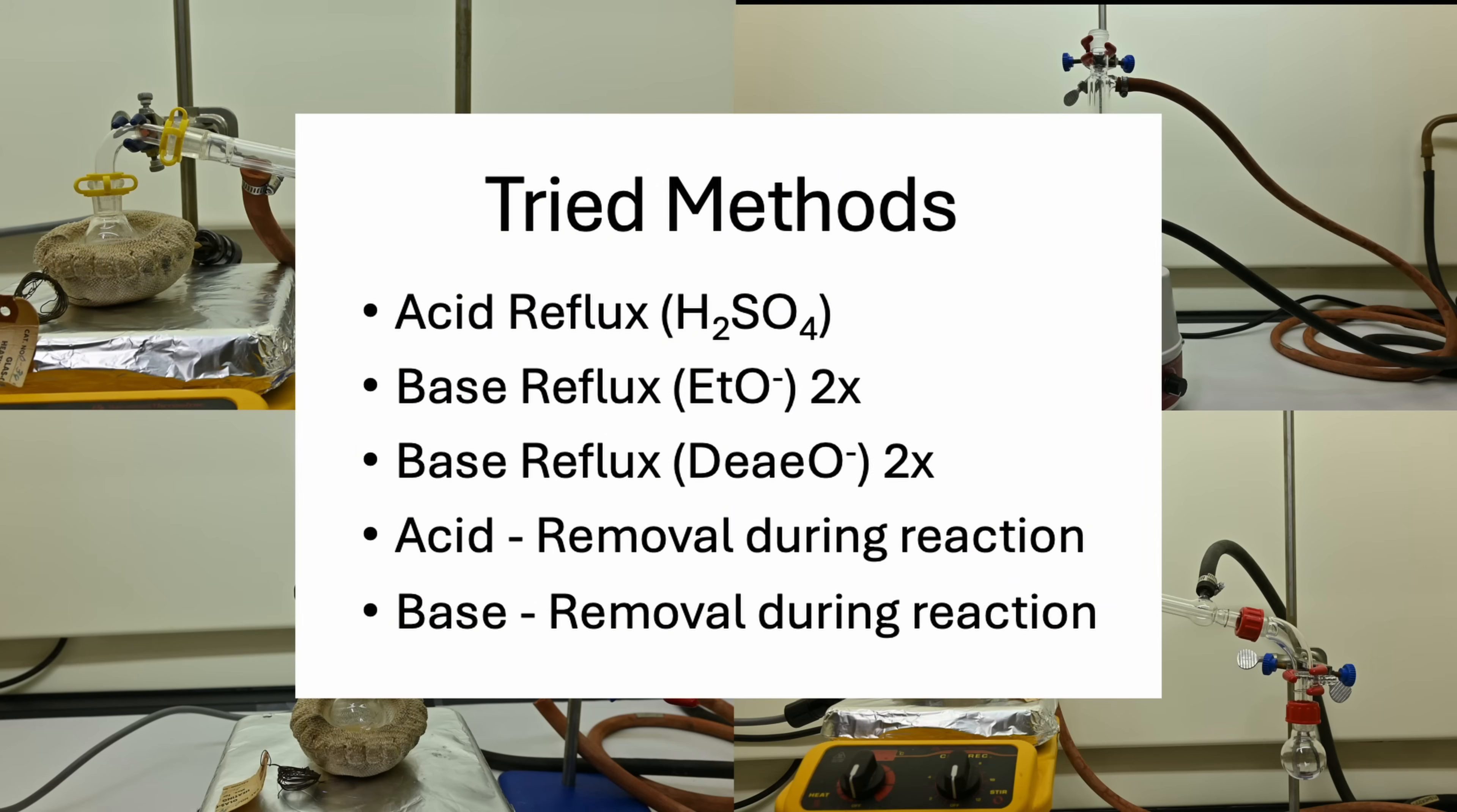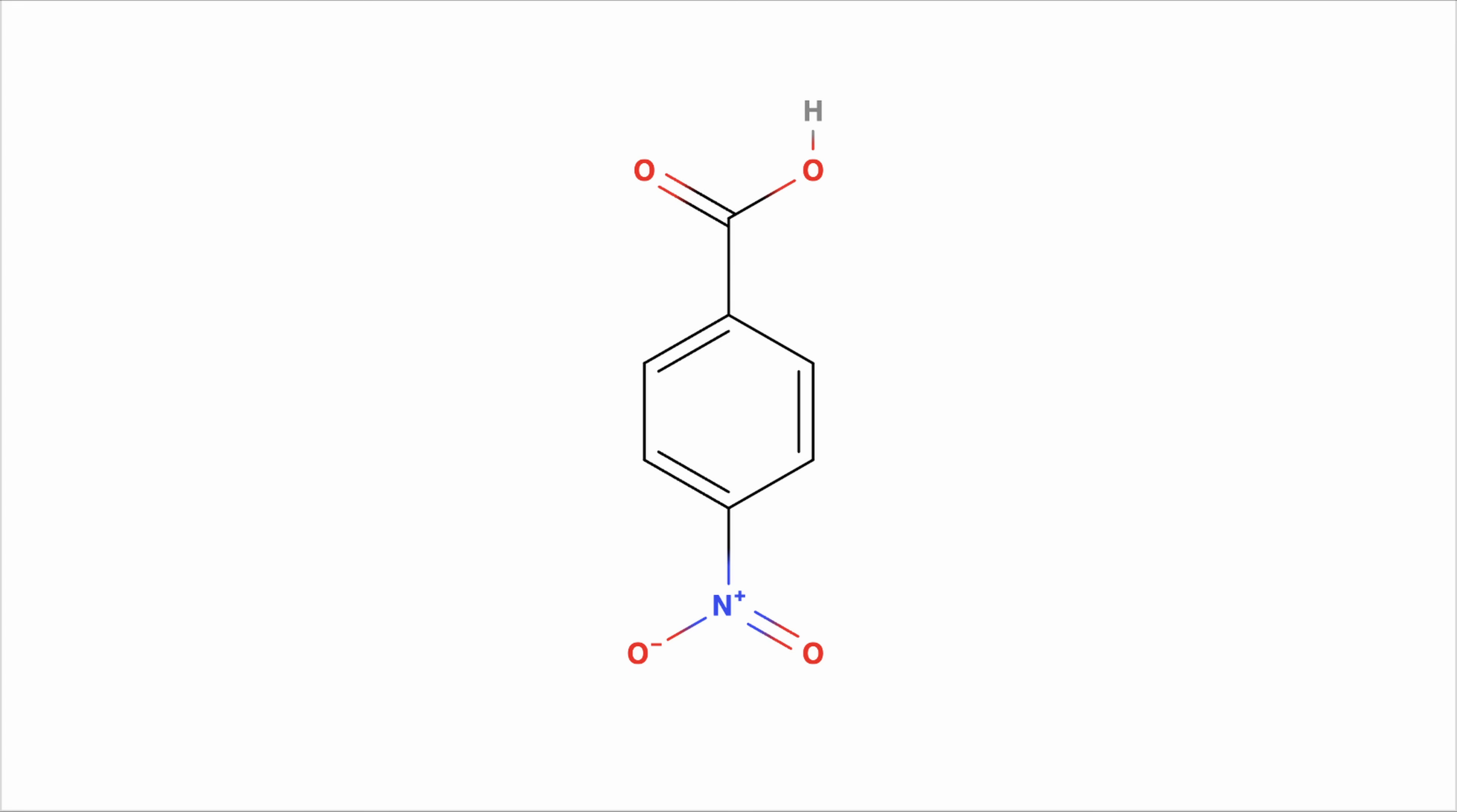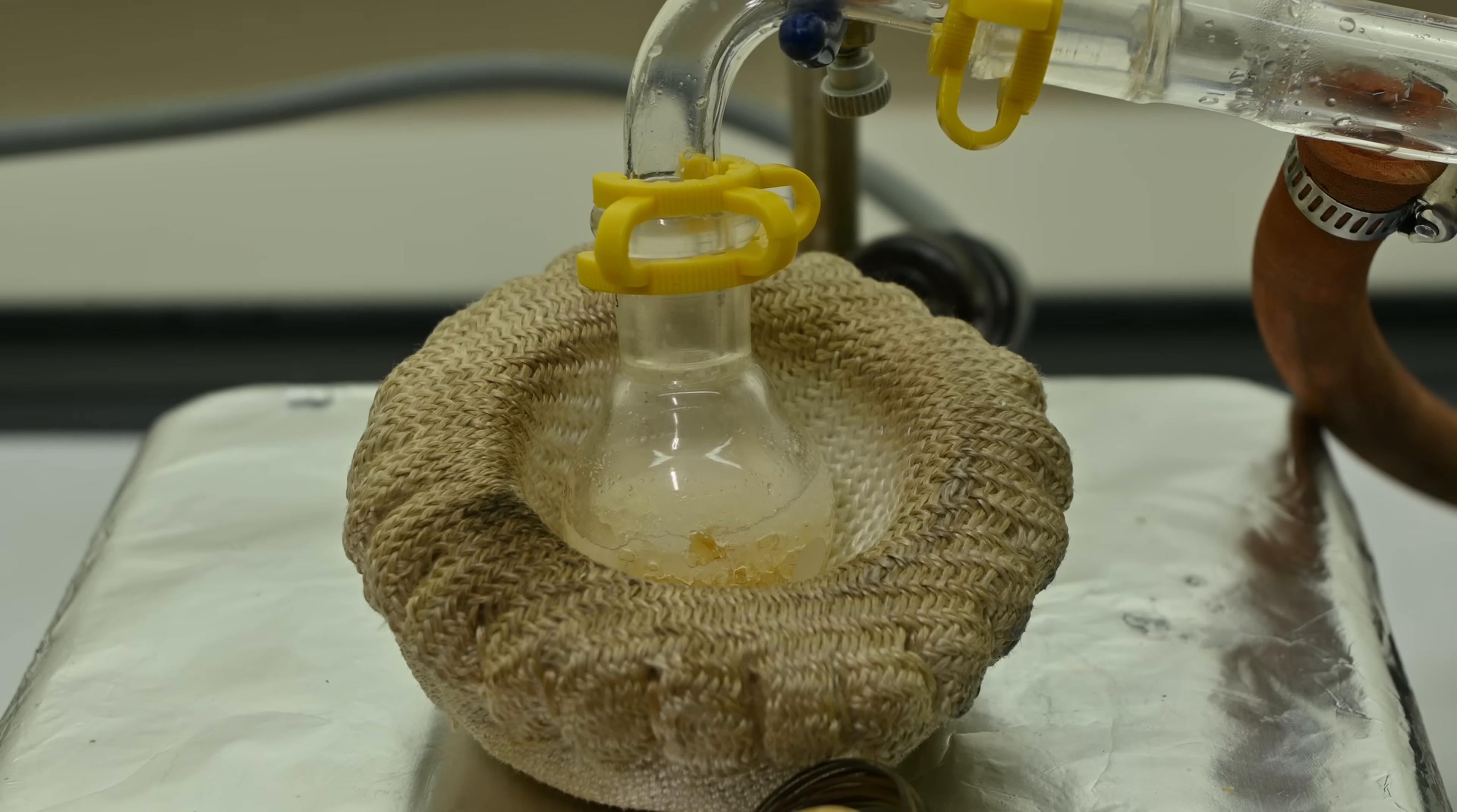Okay, so now what? In chemistry there are often multiple ways to reach a goal. Since transesterification proved challenging, I chose an alternative method using acid chloride chemistry. This requires starting over with P-nitrobenzoic acid instead of benzocaine. I would like to revisit transesterification again, so I want to ask, what do you think went wrong?